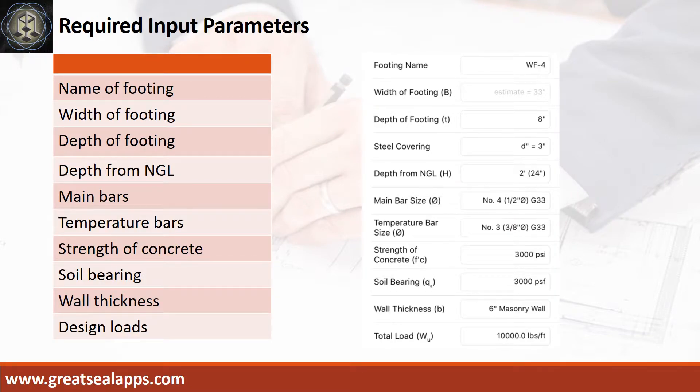Enumerate input parameters required. Footing name, WF4. Depth of footing, 8 inches. Depth from natural grade line, 2 feet.